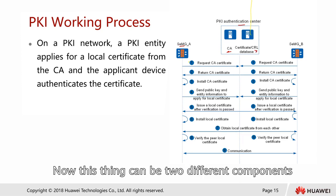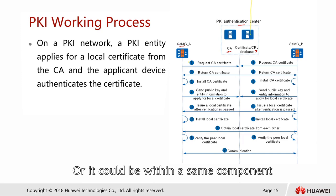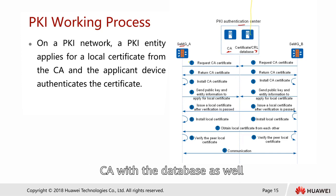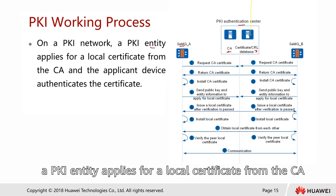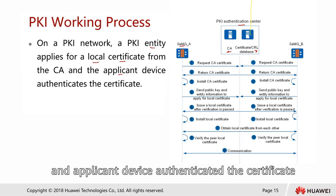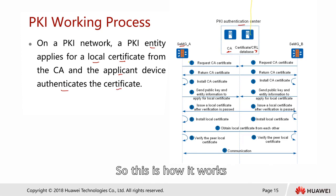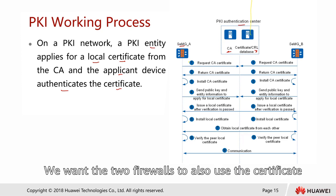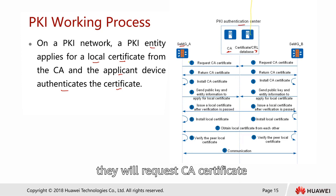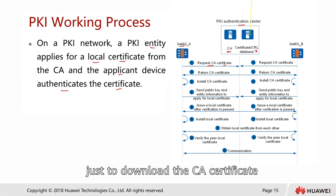Now this thing can be two different components, or it could be within the same components — CA with the database as well. On the PKI network, a PKI entity applies for a local certificate from the CA, and the applicant device authenticates the certificate. So first of all, let's say we have two firewalls. We want the two firewalls to also use the certificate. They will request the CA's certificate — this request is basically just to download the CA cert.